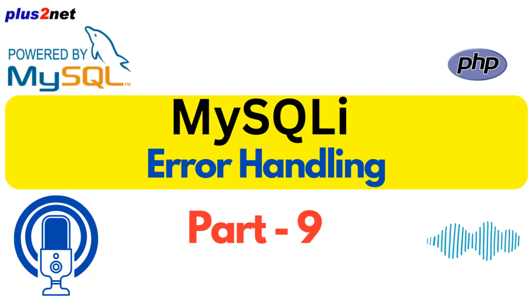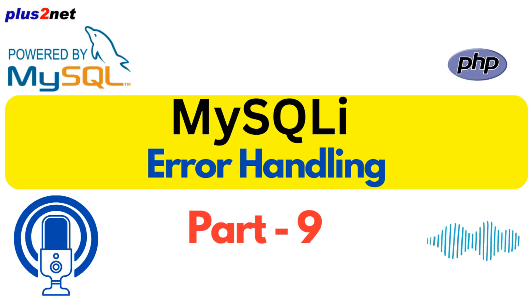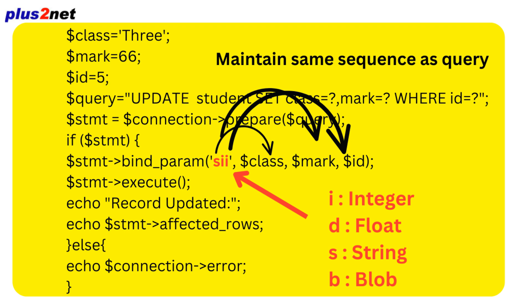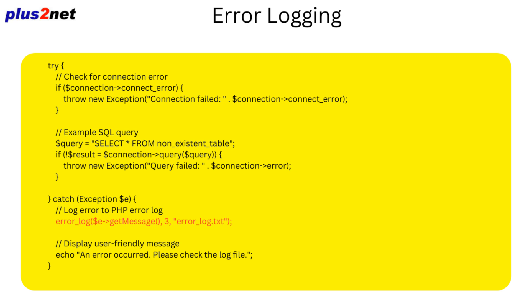We've covered handling connection errors gracefully, deciphering cryptic query errors, using prepared statements to keep data in check, and setting up custom validation rules. But errors can still slip through the cracks. No matter how careful we are, errors are bound to happen — but we're not defenseless. We have a secret weapon: `error_log`. Imagine your web app is live, everything is humming along, and then something breaks — you have no idea what happened, when, or how to reproduce it. That's like trying to solve a mystery with absolutely no clues.